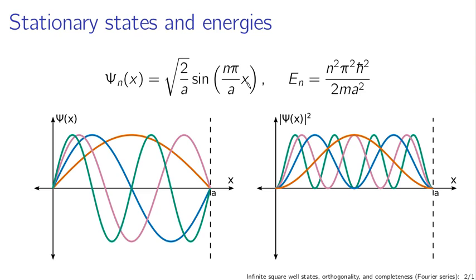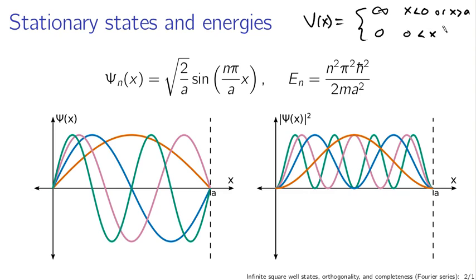These are what our stationary states look like for the infinite square well potential. This is the potential such that V of x is infinity if x is less than 0 or greater than a, and 0 for x between 0 and a. You express the time-independent Schrödinger equation, you solve it, you get sine functions for your solutions, you properly apply the boundary conditions — that psi has to go to 0 at the ends of the interval — and you get n pi over a times x as your argument to the sine functions. When you normalize them properly, you get a square root of 2 over a out front.